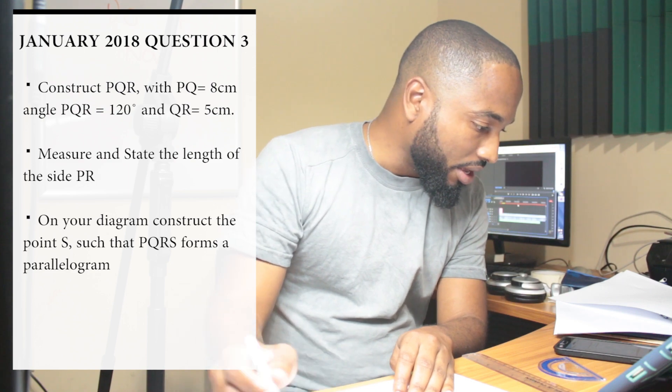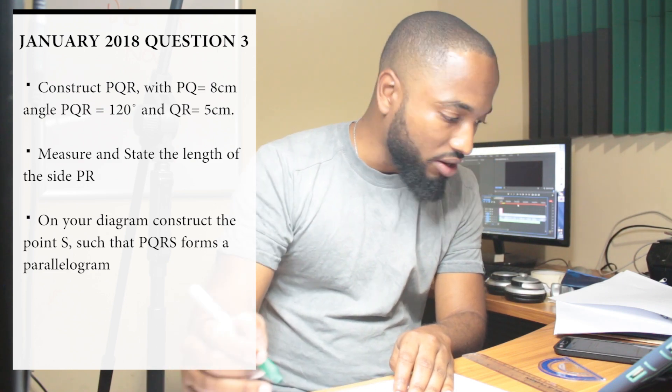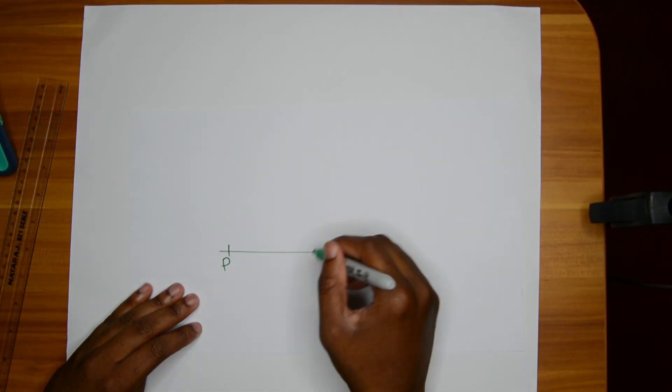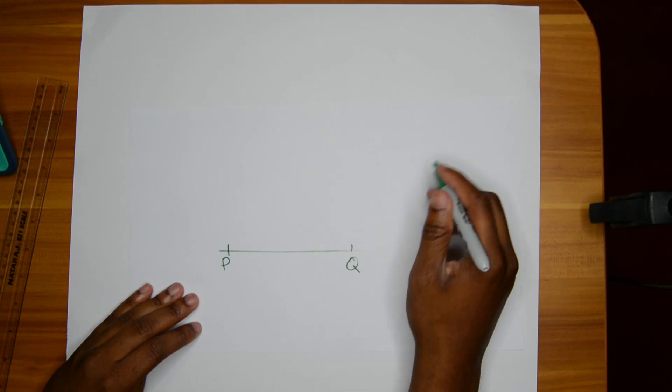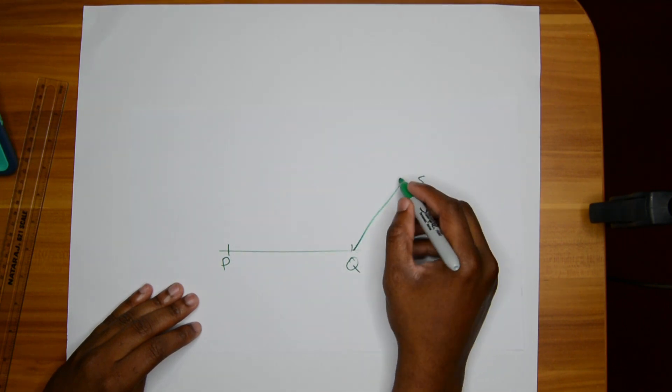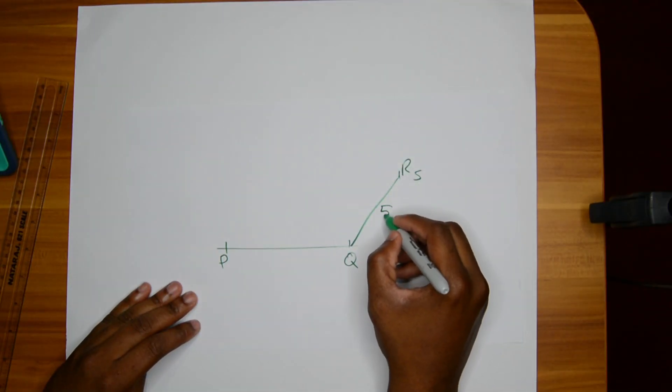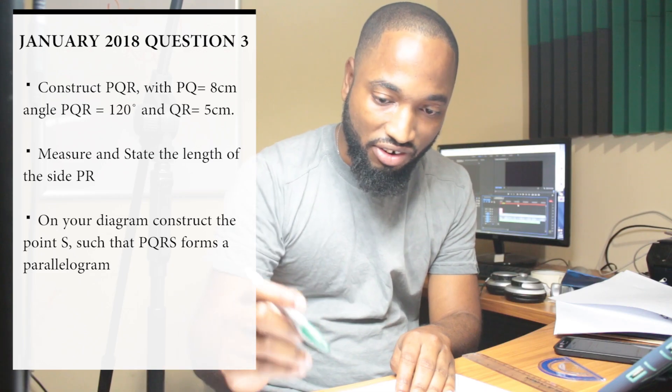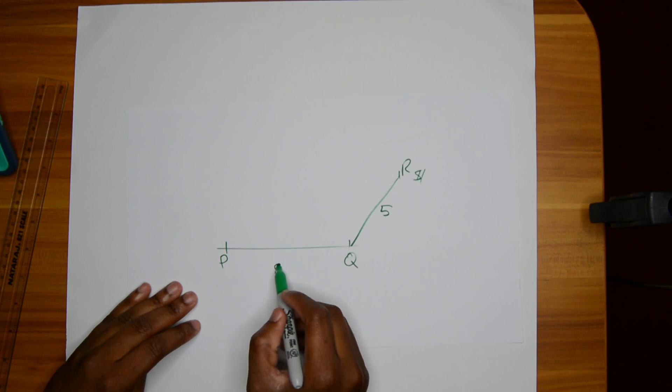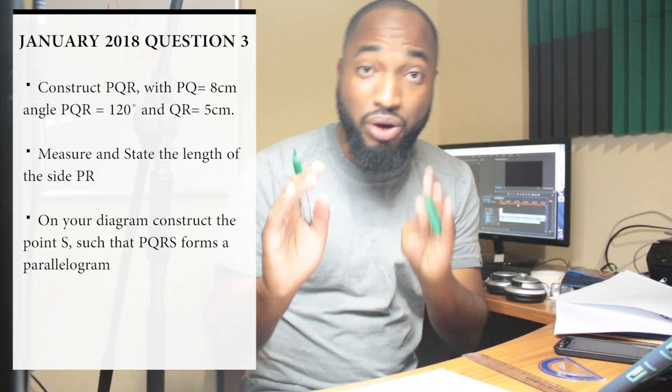Angle PQR is 120, so R is somewhere up here. QR is 5. So this is R. This is 5, this is 8, this is 120. This is a sketch.